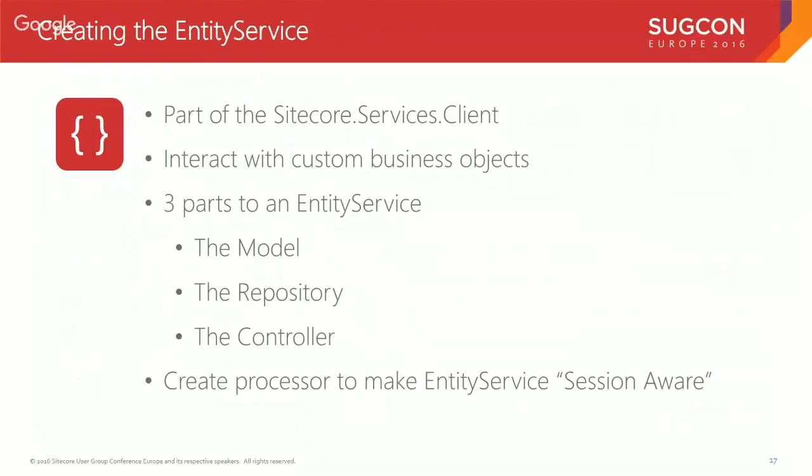Once I found that blog post that told me exactly what to do, it was pretty easy. The first part is creating the model — I created a `SportDeviceDataModel` that inherits from `EntityIdentity`. That's the key piece: in order for it to be used as an entity service model it needs to inherit from `EntityIdentity`. There's nothing magic in the class, it's just a POCO storing data.